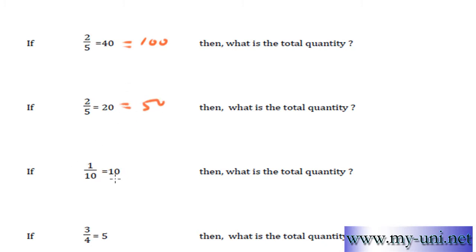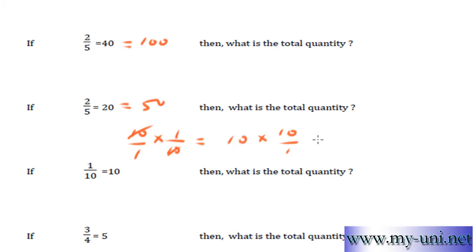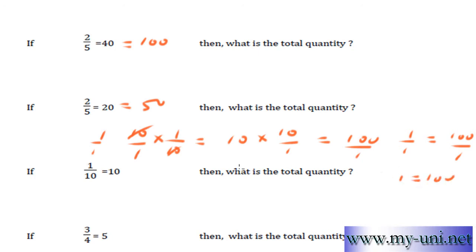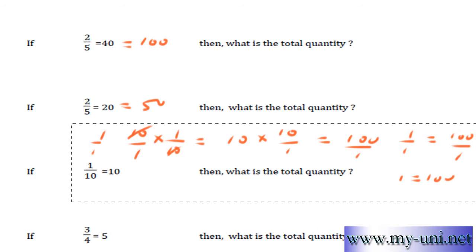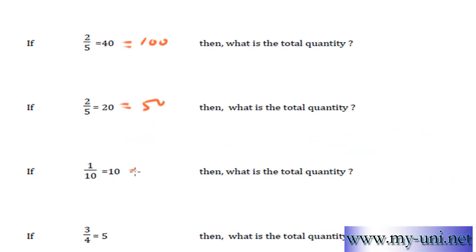1 tenth is equal to 10. Then what is the total quantity? So 1 tenth is equal to 10. To convert this into a whole number, you multiply it by the reciprocal fraction 10 over 1. And when you do that on this side of the equation, you have to do the same on the other side as well — 10 over 1. The 10s will cancel out, and 10 times 10 is 100. So 100 over 1, and this side is already 1 over 1. So 1 over 1 is equal to 100 over 1 — the whole quantity is equal to 100.